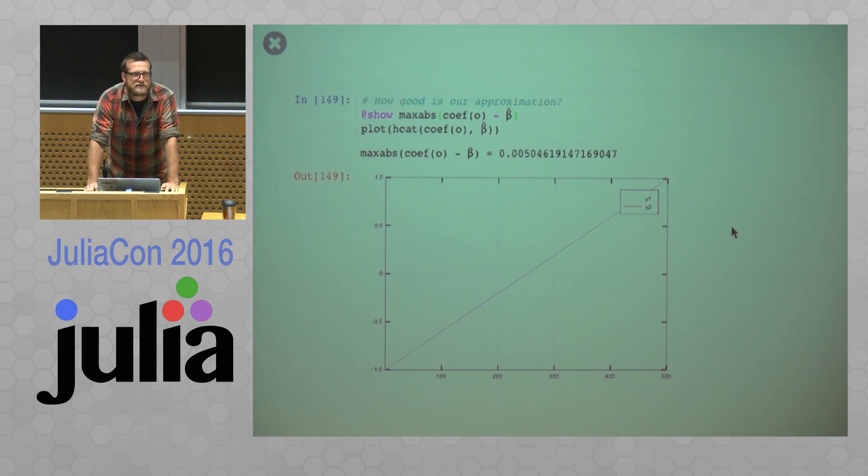So that shows one of the advantages of these online algorithms. So you might have these huge data sets, and you might be forced to only do an approximation, but if your approximation is arbitrarily close, what's the difference?